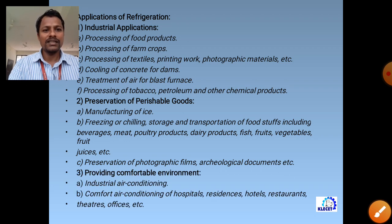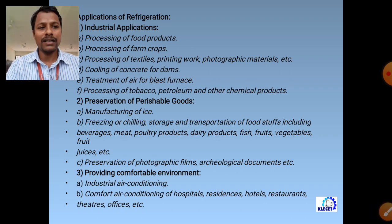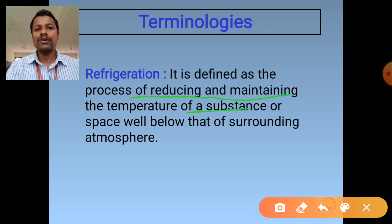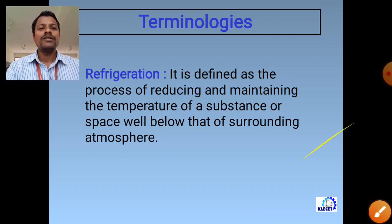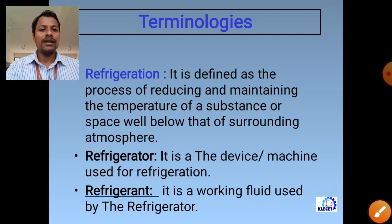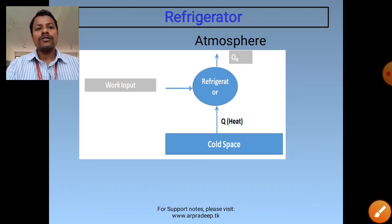Another part of this module is air cycle refrigeration, wherein we study the reversed Carnot cycle and the reversed Brayton cycle. We have already studied the Brayton cycle in gas power cycles; here it is executed in reverse manner. After that, we study the vapor absorption refrigeration system. This completes the refrigeration cycles portion of the V2 syllabus.